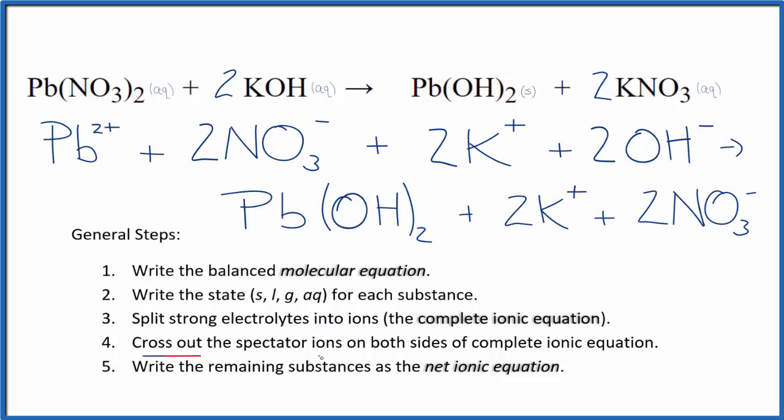Now we can cross out the spectator ions. They're on both sides of the complete ionic equation. We see in the reactants we have two nitrate ions. We also have two nitrate ions in the products. These are spectator ions. We can cross these out.